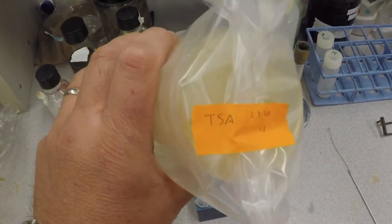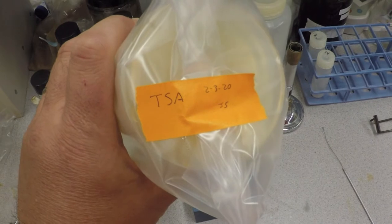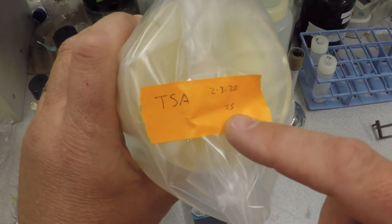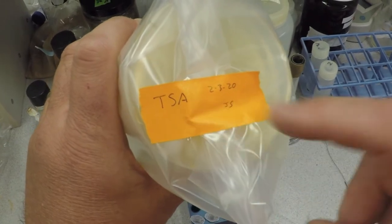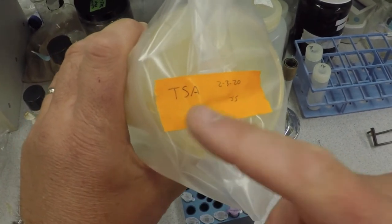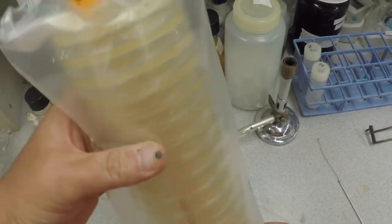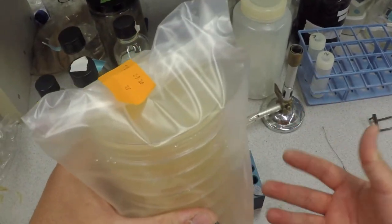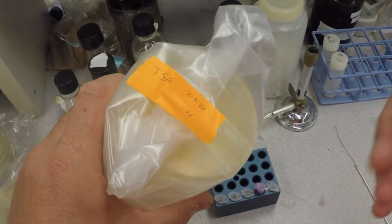This is, I hope you can see, tryptic soy agar, TSA. Notice the person has put down their initials and also the date that they made these plates and poured them, which is very important. Tryptic soy agar is really simple—it's called complex agar, but it's a simple formula.